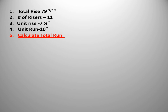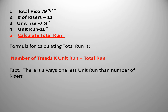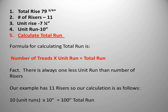Now we can calculate our total run. The formula is the quantity of treads times the unit run. Note that there is always one less tread than the number of risers, because the bottom tread is our phantom run and is actually part of the lower floor and not counted as a tread. Since our example has 11 risers, it has 10 treads. So our formula is 10 unit runs times 10 inches, which equals 100 inches of total run.